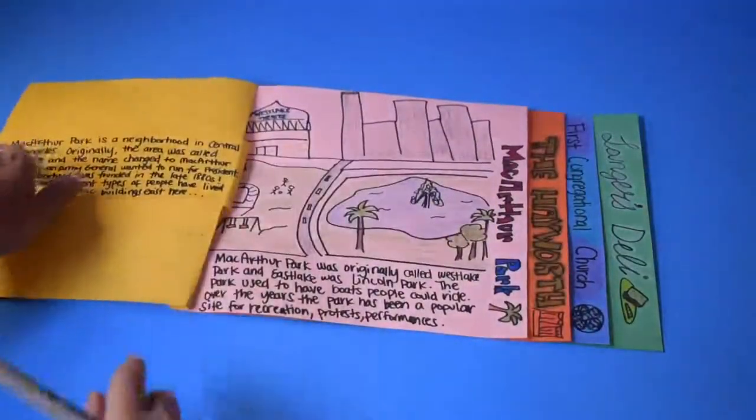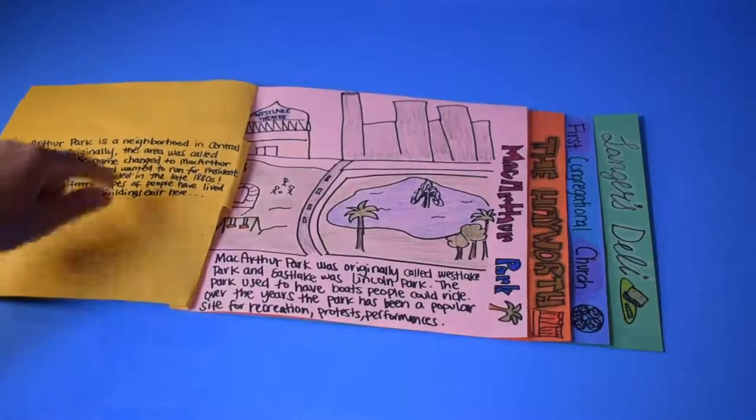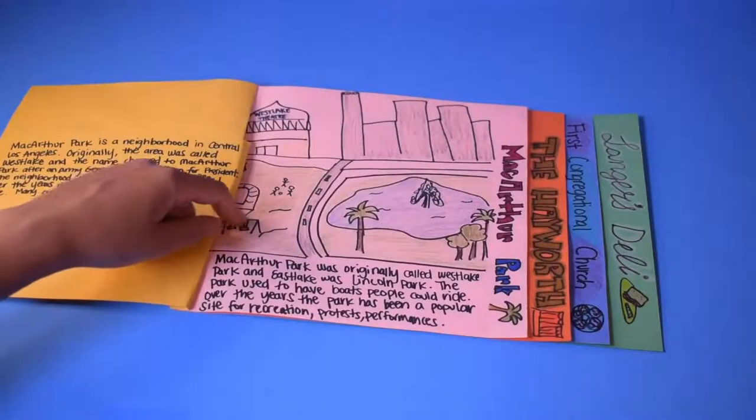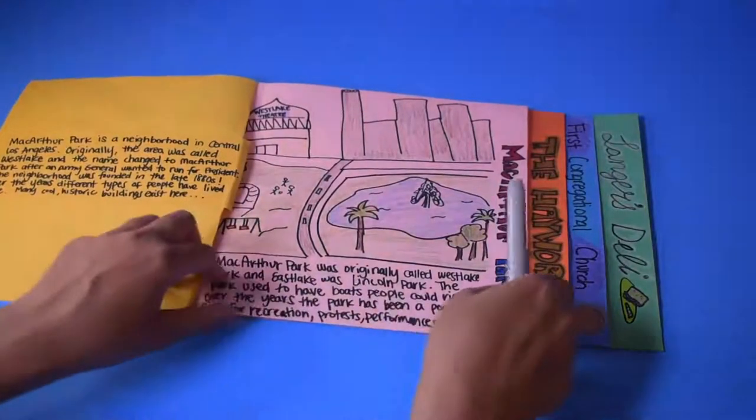On the first page, the short history of your neighborhood, think about when it was founded and why it was founded. On the following pages, draw each place and think about what this place is, who uses it, and why it's important.